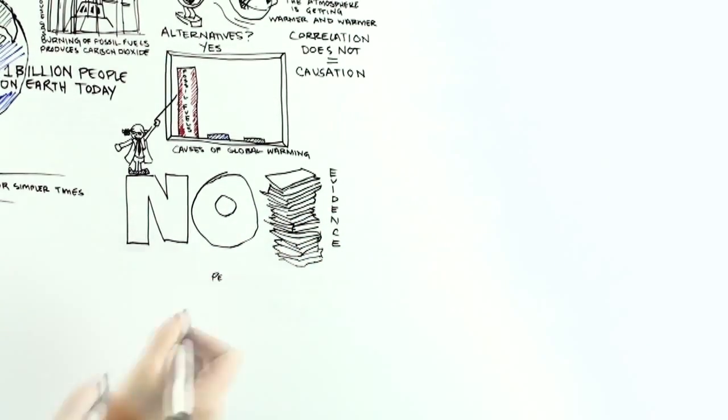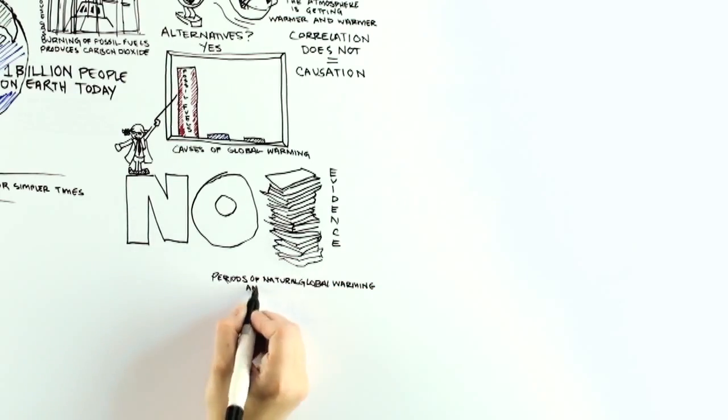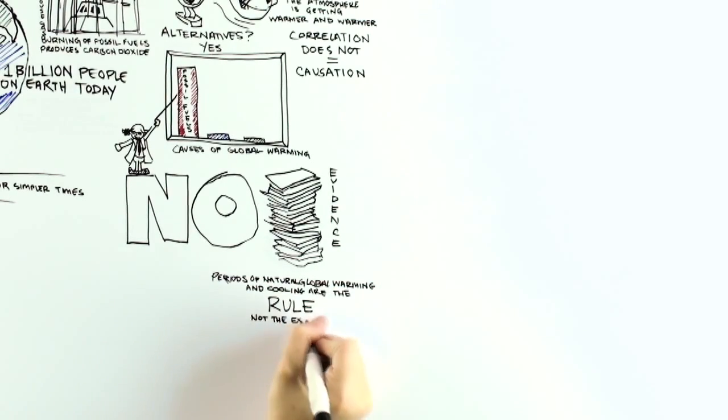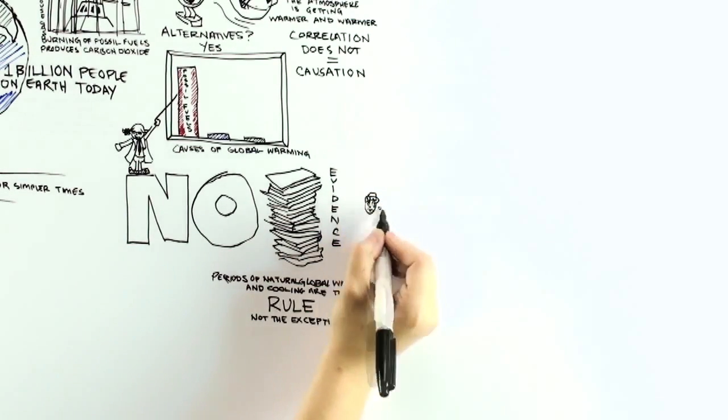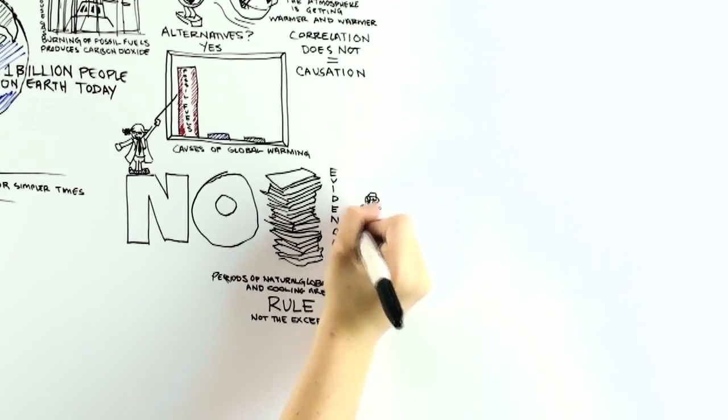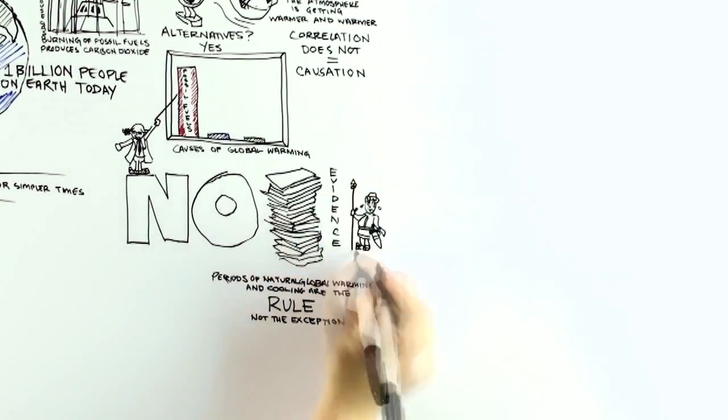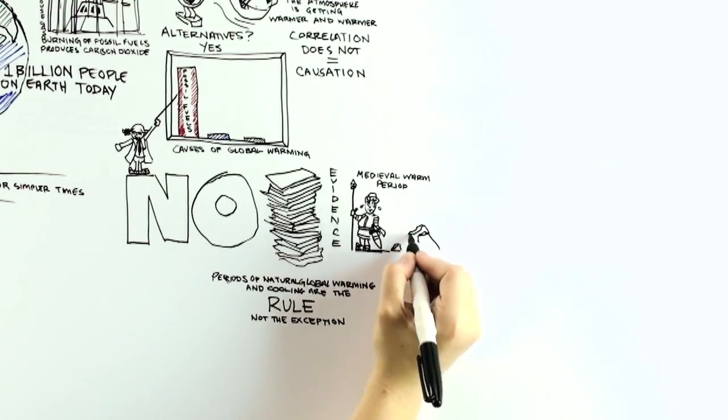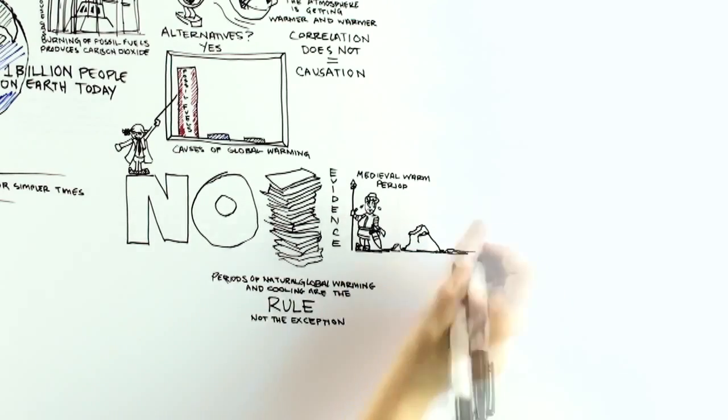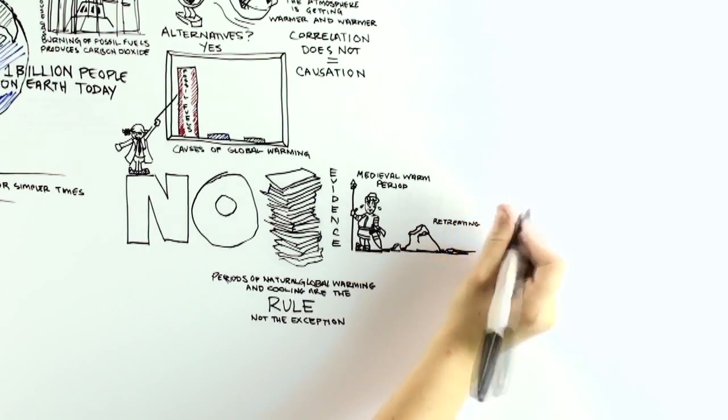Before global warming became the most popular climate research topic, most of the evidence that had been published over the years suggested that periods of natural global warming and cooling are the rule, not the exception. A number of indirect measures of past temperature, so-called temperature proxies, suggest that it might well have been warmer during some decades around 1000 AD, during the medieval warm period, than it has been recently.